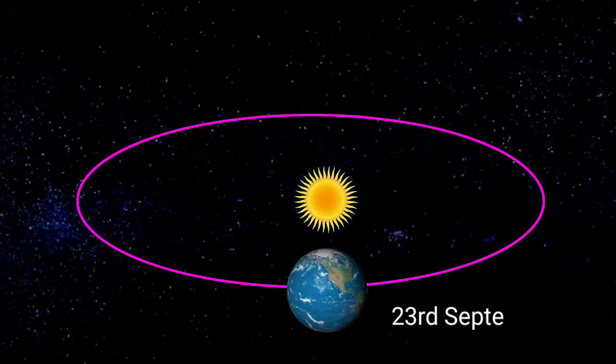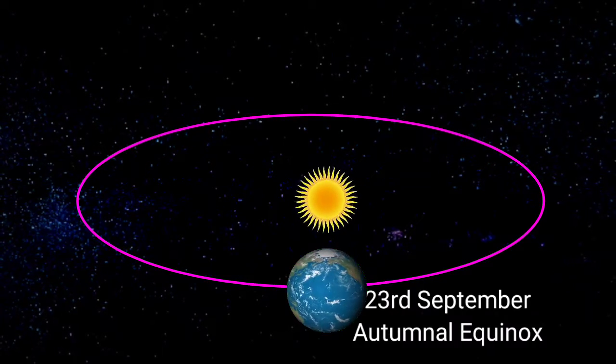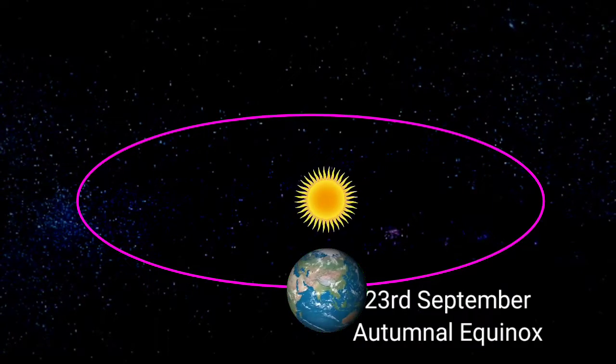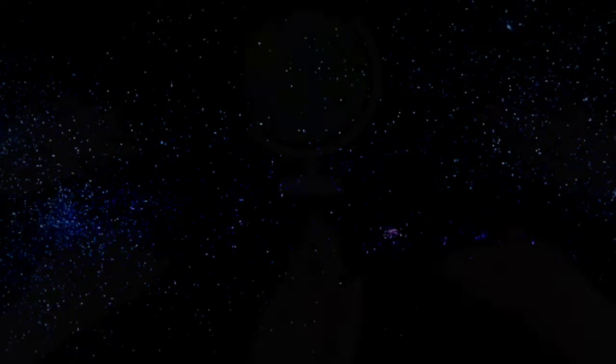on around 23rd September, again the length of the day and night, it is known as autumnal equinox.